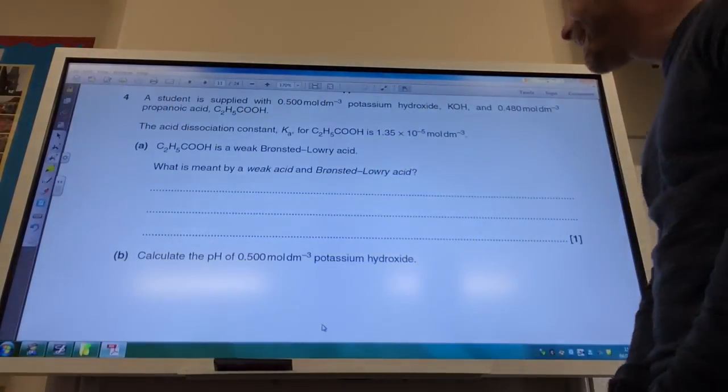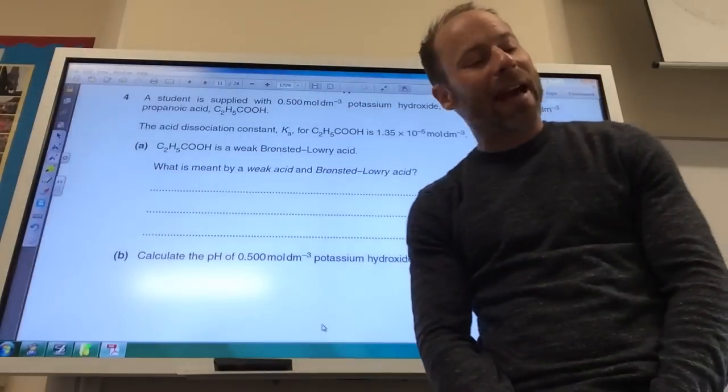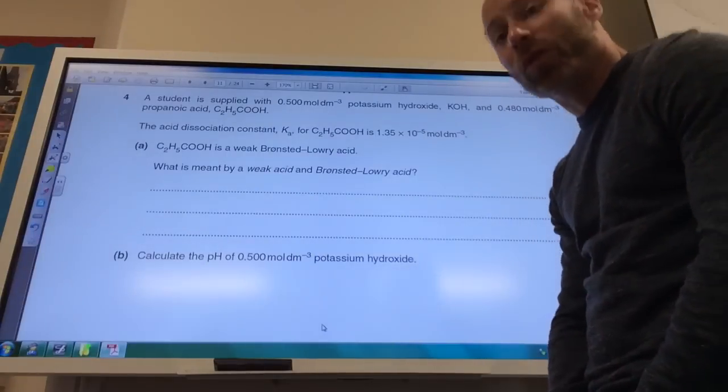So first of all, a weak acid means it partially dissociates. A Bronsted-Lowry acid means it is a proton donor.